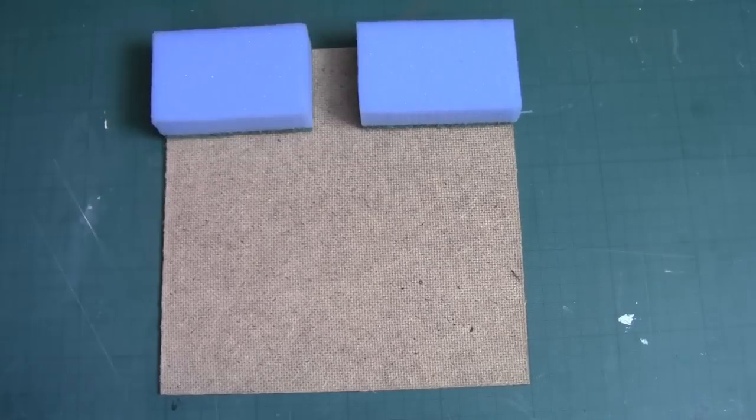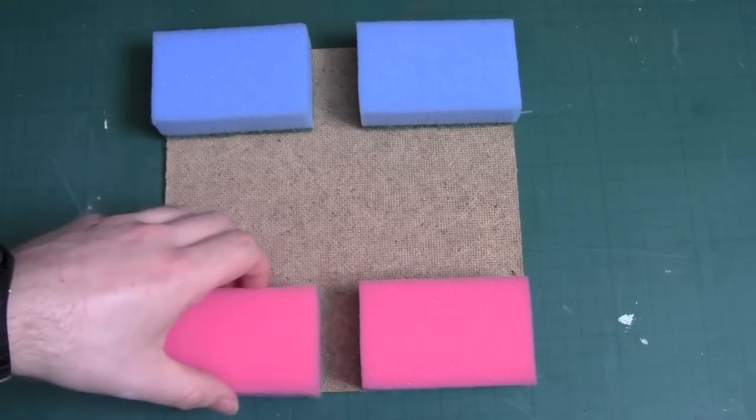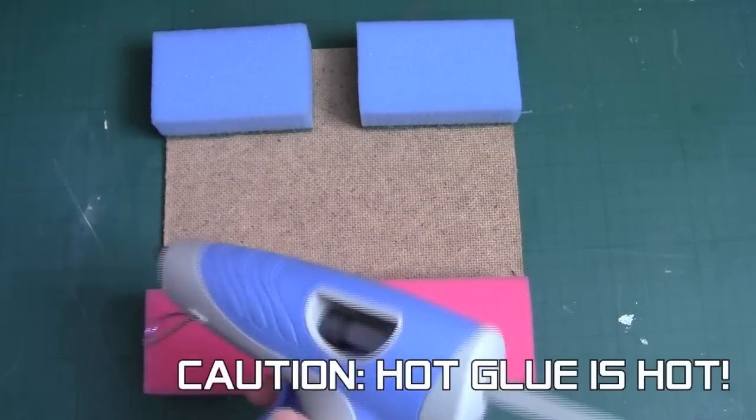The first step is to flip over the piece of hardboard so you have the rough side facing up. Then get each sponge and place it in every corner, prepared and ready to be glued.